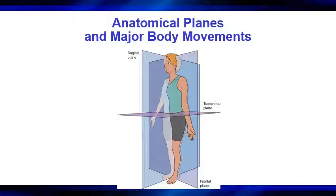Those are some examples. As I go through this and when I'm done, go back and think of others. The transverse plane is primarily a lot of your rotational movements — shoulder rotation, internal and external rotation, trunk rotation, hip internal and external rotation. Those are movements that go through the transverse plane.